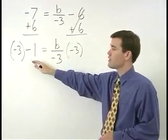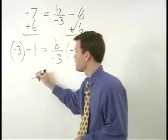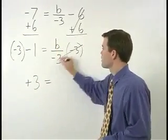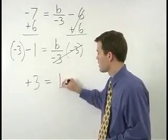On the left, negative 3 times negative 1 is positive 3. And on the right, our negative 3's cancel, and we're left with B. So positive 3 equals B.